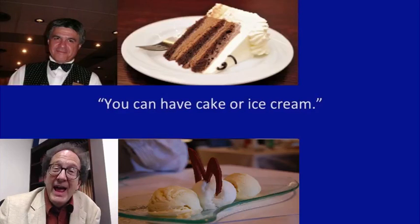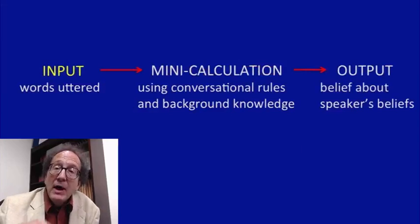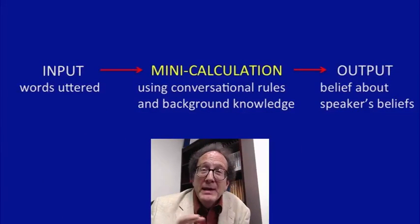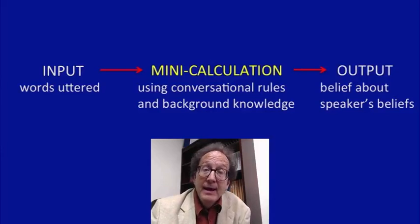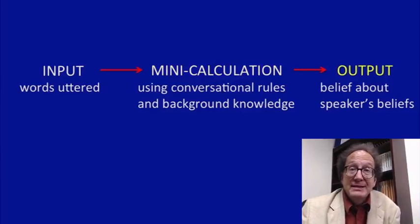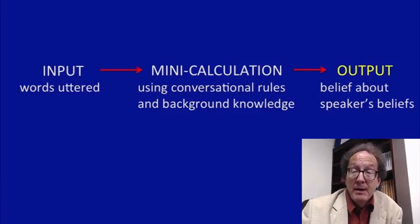The way you figure that out is you took what he said, plus a little background knowledge about him being a waiter and having certain goals and what happens in restaurants, and performed a little mini-calculation using the maxim of quantity, and inferred that he must believe that you can't have pie. And since he's a waiter who ought to know whether you can have something else or not, therefore you can't have pie.